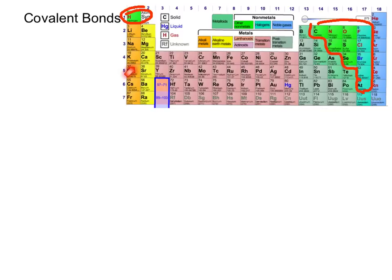We've talked a lot about ionic bonds. An ionic bond is when a metal gives up an electron and gives it to a non-metal, puts a charge on the atom, and they're attracted and they make compounds.